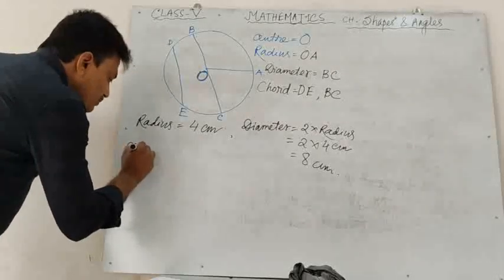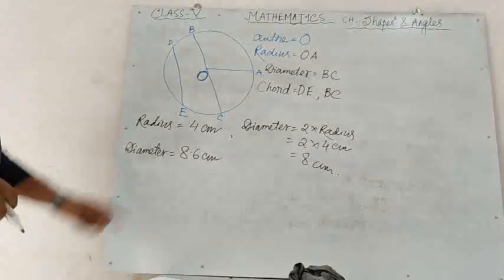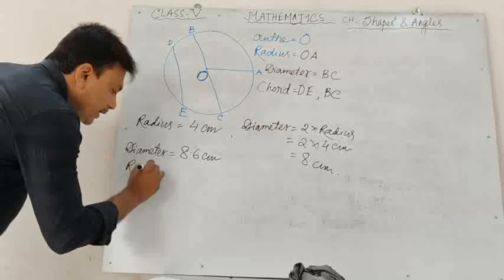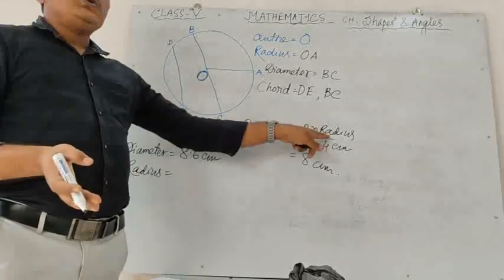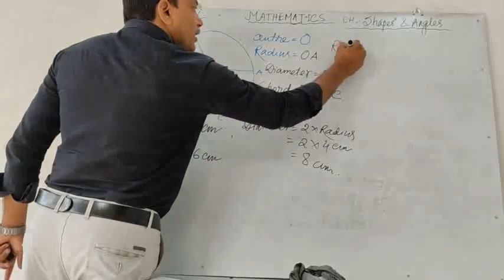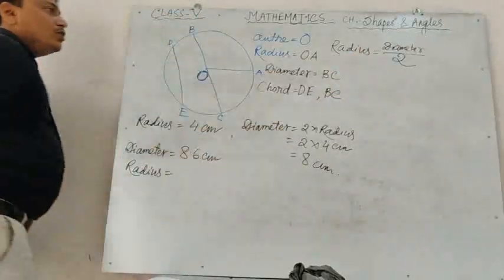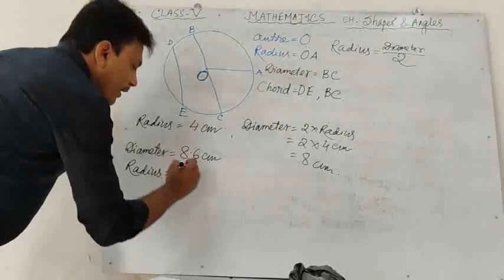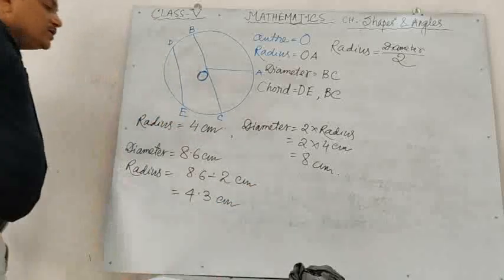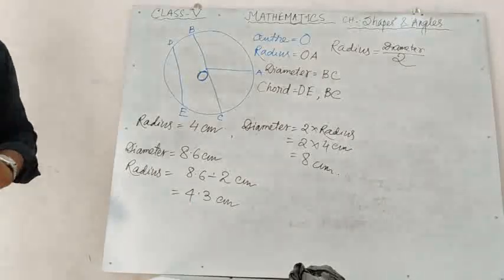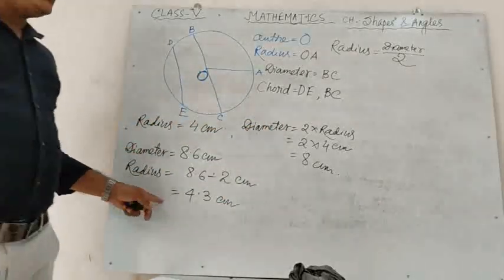Similarly, if the diameter is given — suppose diameter equals 8.6 cm — and you have to find out the radius. Since diameter equals 2 into radius, we can write: radius equals diameter divided by 2. So radius equals 8.6 divided by 2, which gives 4.3 cm. If diameter is given, we can find out the radius.